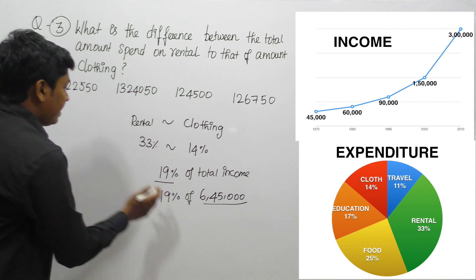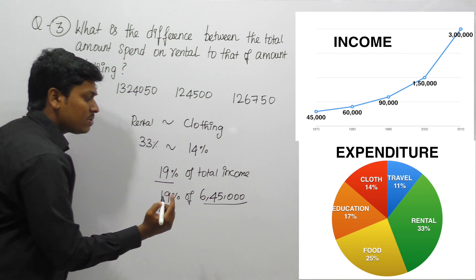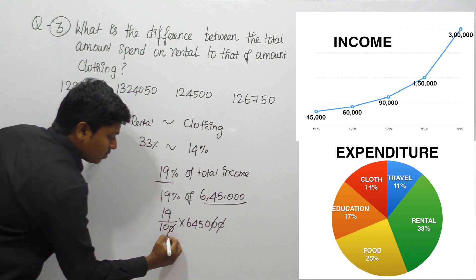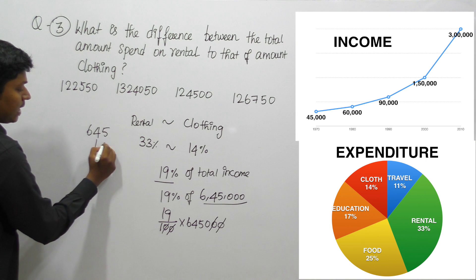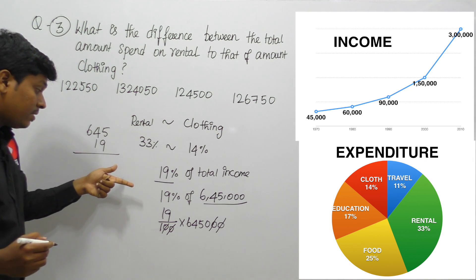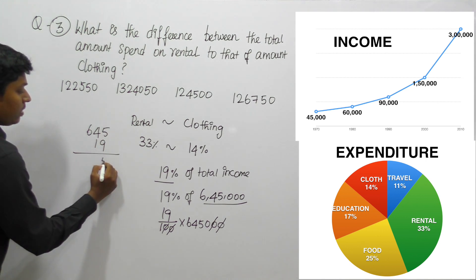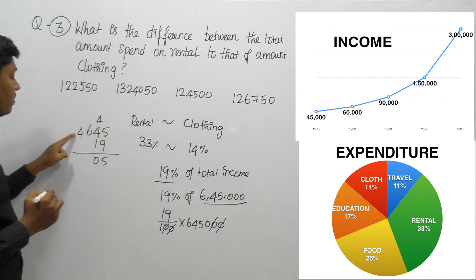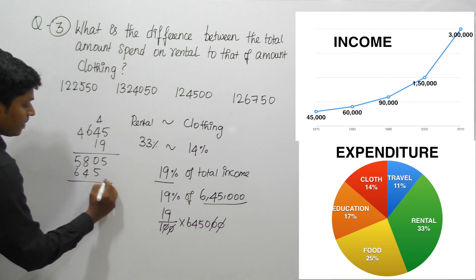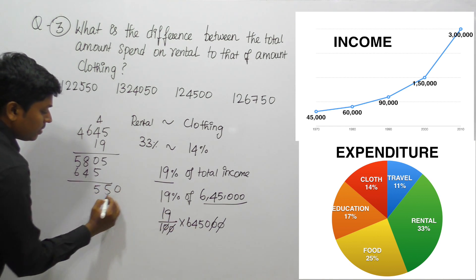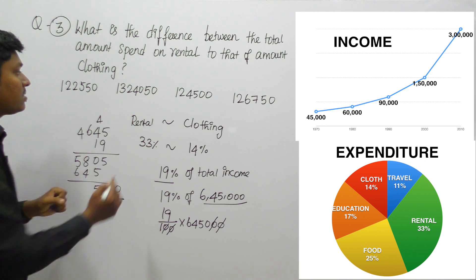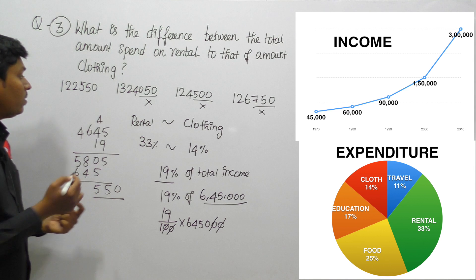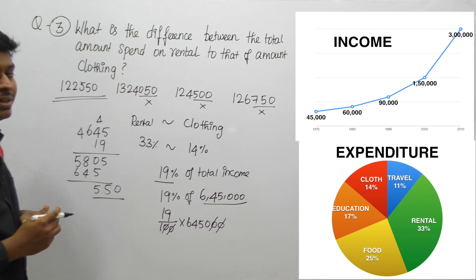19% can be written as 20% − 1%, or we can calculate directly: 19/100 × 6,45,000. Cancelling the zeros: 645 × 19. Working through the multiplication: 645 × 9 = 5805, carry; 645 × 10 = 6450; total = 12,255 → giving 1,22,550. The last three digits should be 550, which eliminates other options. So option A, that is 1,22,550, is the answer.